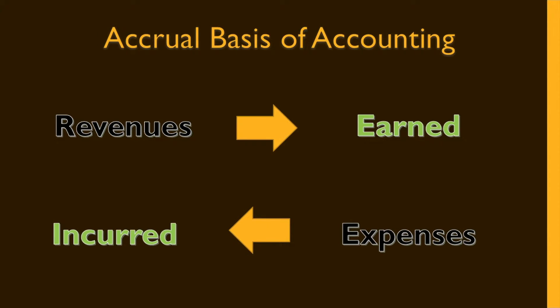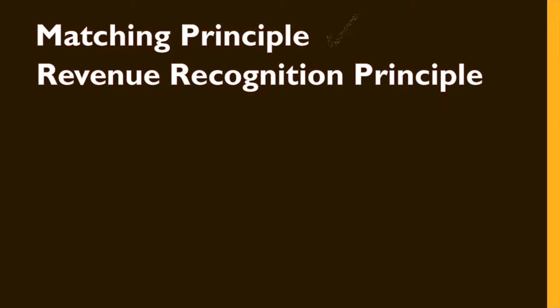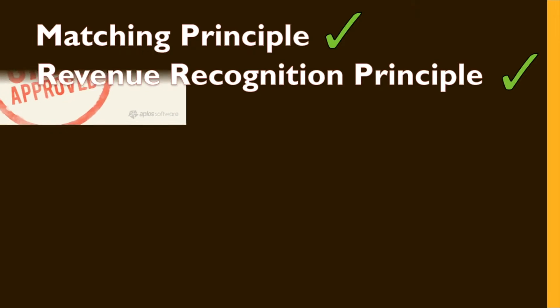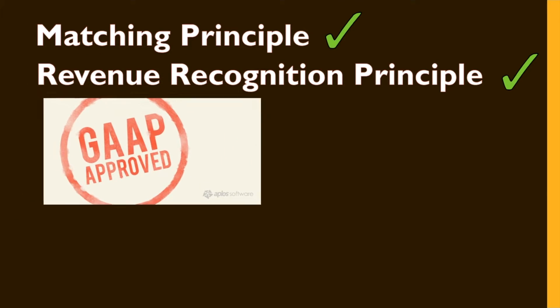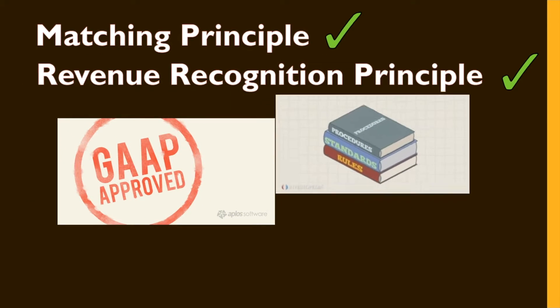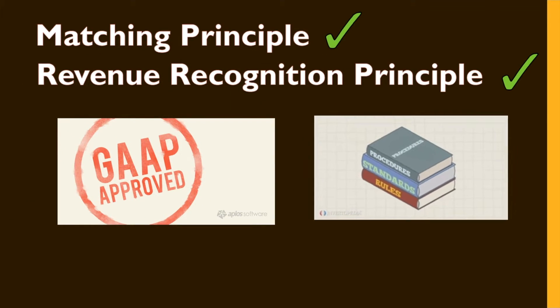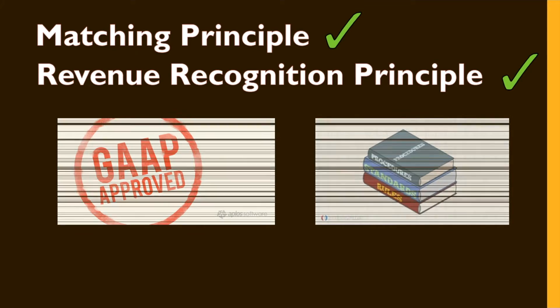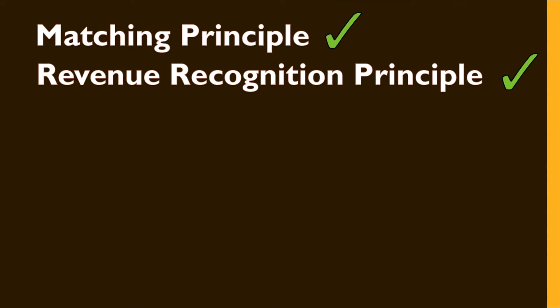Under the accrual basis of accounting, adjusting journal entries are made in order to ensure that the entity's revenues and expenses are properly recorded in adherence to the matching and revenue recognition principles. Because of the misalignment in timing, cash is never affected in adjusting journal entries.